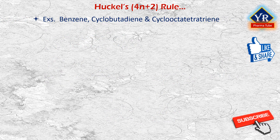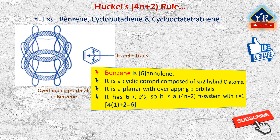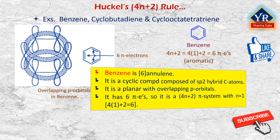Benzene, cyclobutadiene, and cyclooctatetraene provide clear examples of Hückel's rule. Benzene is a 6-annulene. It is a cyclic compound with the ring composed of sp2 hybrid carbon atoms. The molecule can easily achieve a planar structure with a continuous ring of overlapping p orbitals. Benzene has 6 pi electrons — there are 3 double bonds in the classical structure of benzene — so it is a 4n+2 pi system with n=1, that is 4×1+2=6. Thus, Hückel's rule predicts benzene to be aromatic.